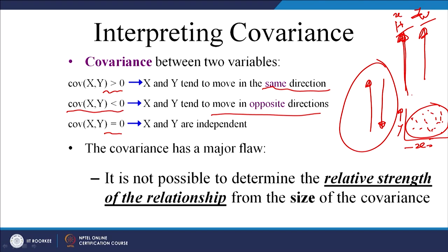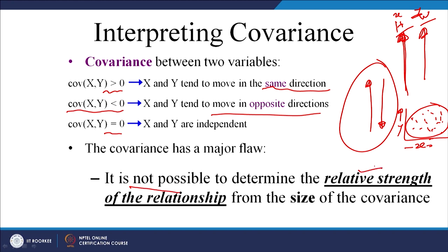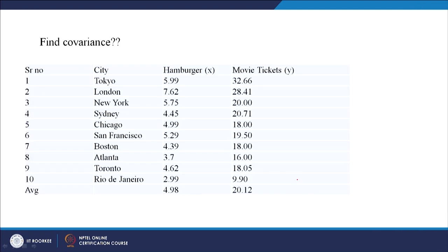There is one major flaw with covariance: it is not possible to determine the relative strength of the relationship from the size of the covariance. For example, if covariance is 100 in one dataset and 3 in another, we cannot say the first has high covariance and the second does not. The size of the covariance does not tell you whether the relationship is strong or weak — that is a drawback. Let us move on to an example on covariance.